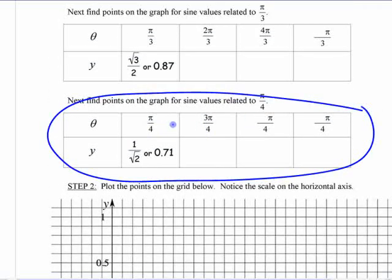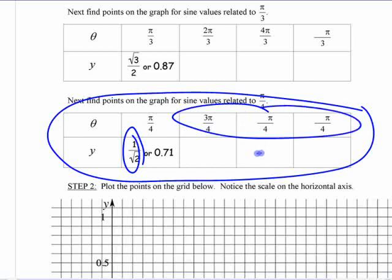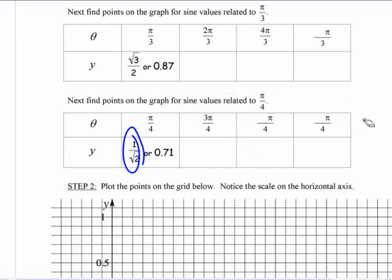And again, remember that these are all related. You know, if 1 over 2 is one of the values for 45 degrees, 5 over 4, all of these are going to be related. It's just sometimes they'll be positive and sometimes they'll be negative.